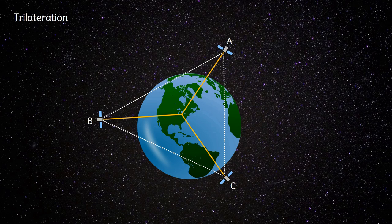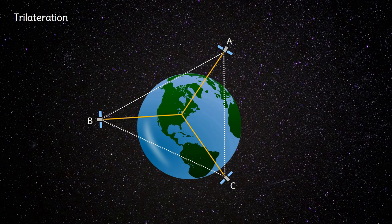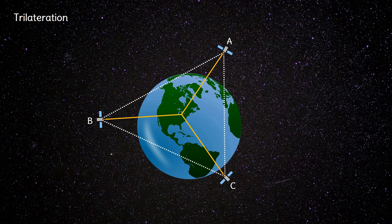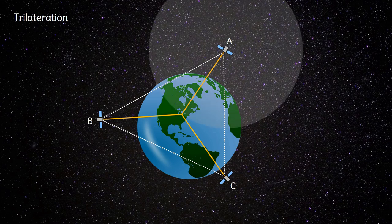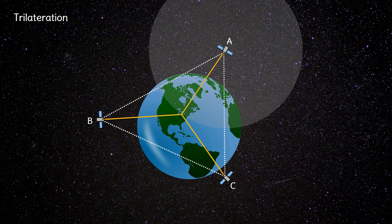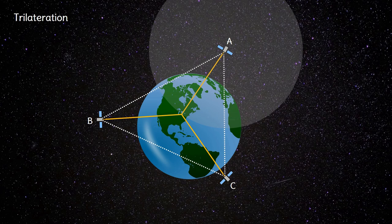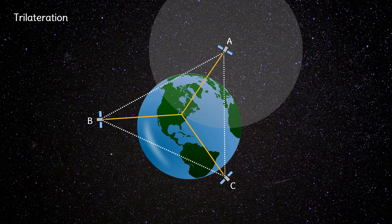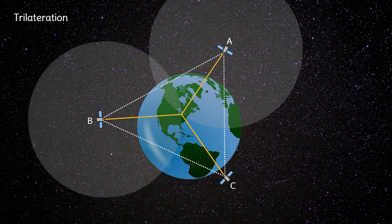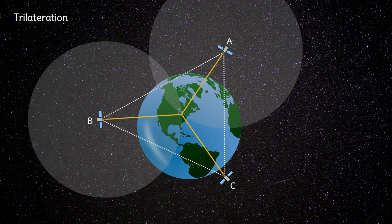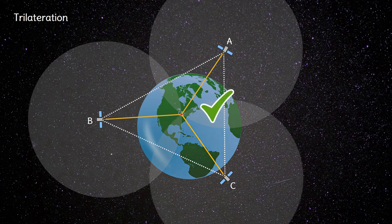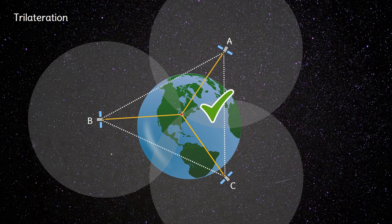So how does that work? When the user knows the range to satellite A and its position, they know that they are within a sphere with its center at the satellite location and a radius equals to the range. When the user knows the distance to one more satellite, satellite B, then they would know that they exist somewhere at the intersection of the two spheres. With one more measurement the user's location is determined. Please note that the spheres appear as circles in this illustration.